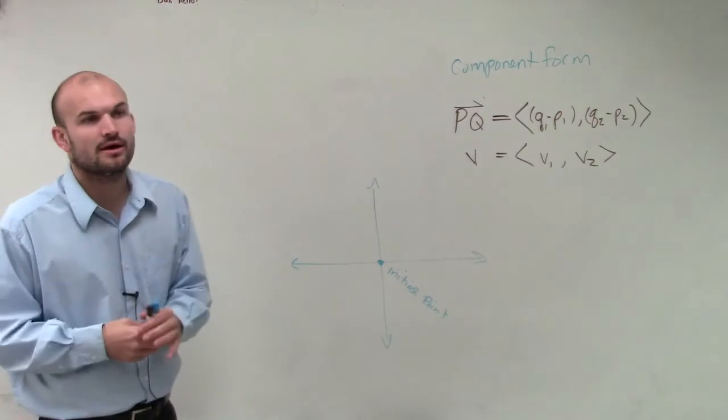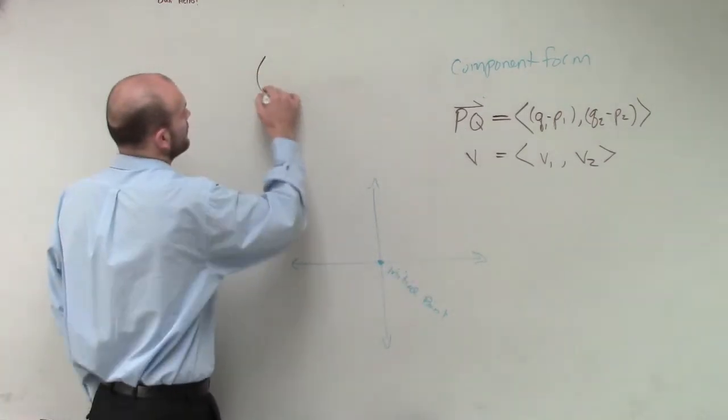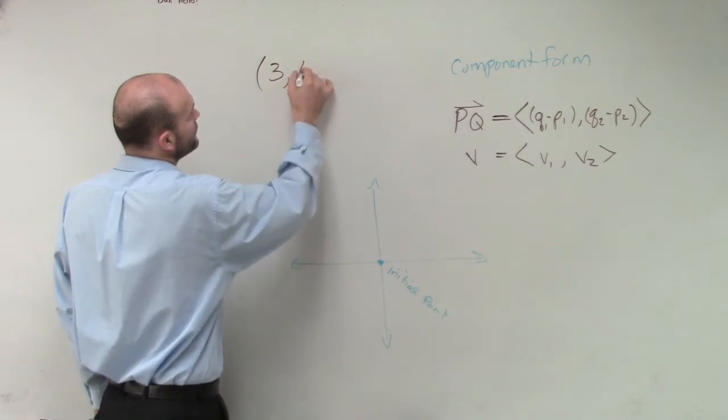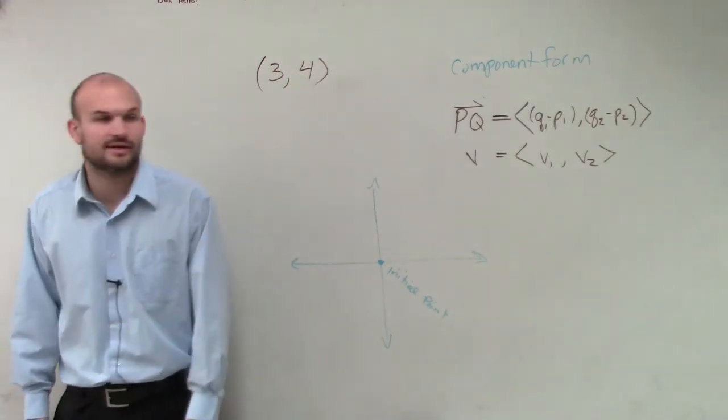So let's say I say, all right, draw the vector. And what if I said, draw the vector 3, 4? Well, by your mathematical knowledge, what does 3, 4 represent?